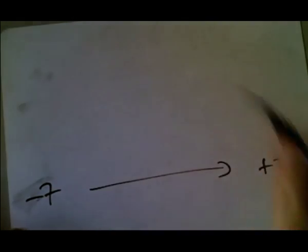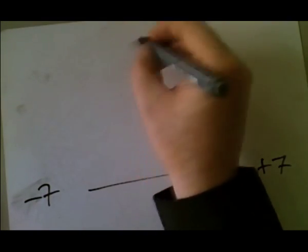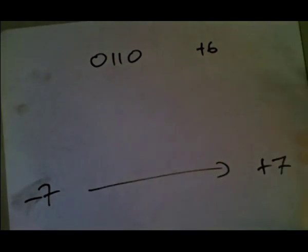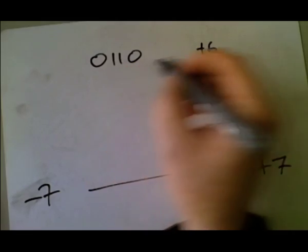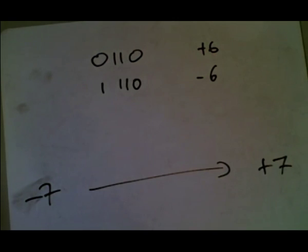Let's draw a number line, minus 7 to plus 7. That's the range of a 4 digit signed binary number. Say I've got plus 6, which is this. If I want minus 6, I just change the sign, so that's minus 6. Now in binary, in mathematics, if I've got minus 6, minus 6 plus 1 equals minus 5.